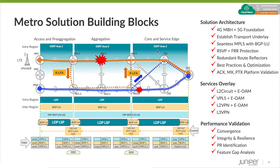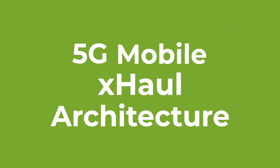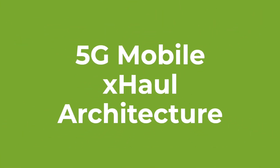We went a step further and updated the topology to compare performance against different protocols: ISIS versus OSPF, and LDP with remote LFA versus RSVP with fast reroute. We validated all these different combinations.